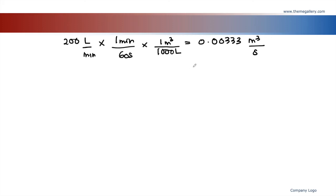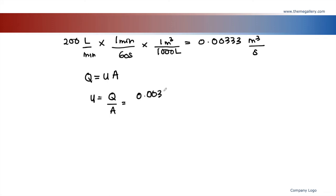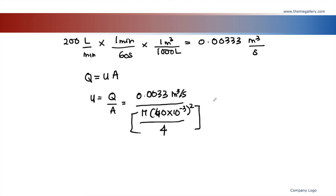Calculate the Reynolds number for Part B. First find velocity: U equals Q over A equals 0.00333 divided by pi times (40 times 10⁻³)² over 4, giving velocity equals 2.643 m/s. Then Reynolds number equals rho·V·D over mu equals 1000 times 2.643 times 40 times 10⁻³ divided by 1.14 times 10⁻³, giving Re equals 92,736, which is approximately 9.3 times 10 to the power of 4.